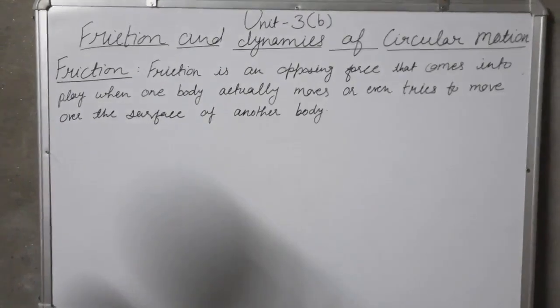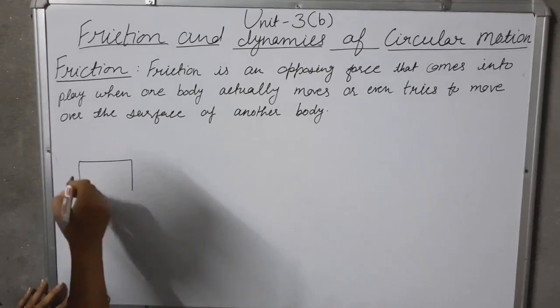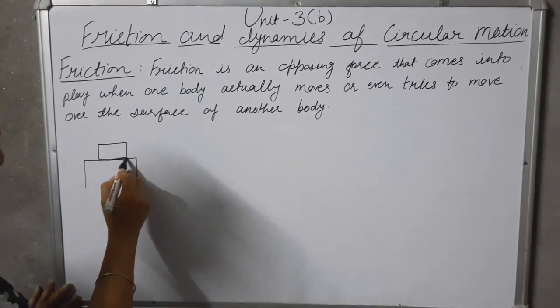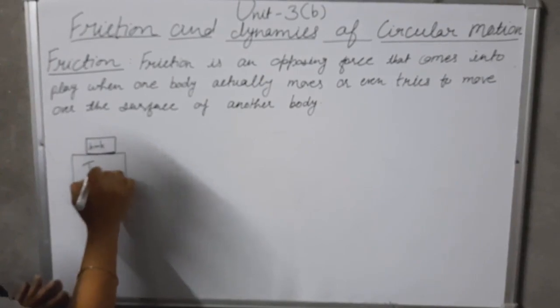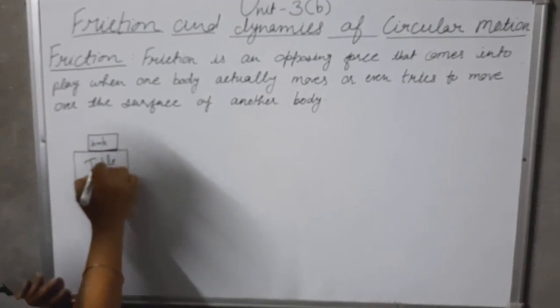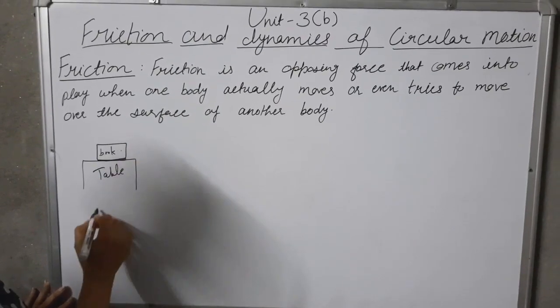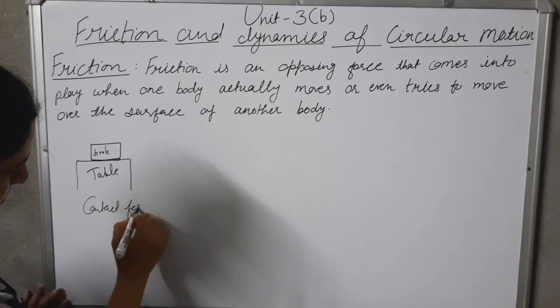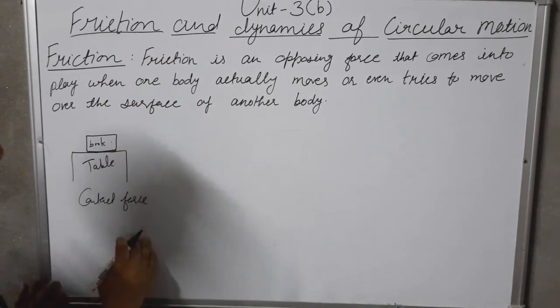For example, if we take a book on a table, then the force between this book and this table is called contact force. This frictional force is an example of contact force.